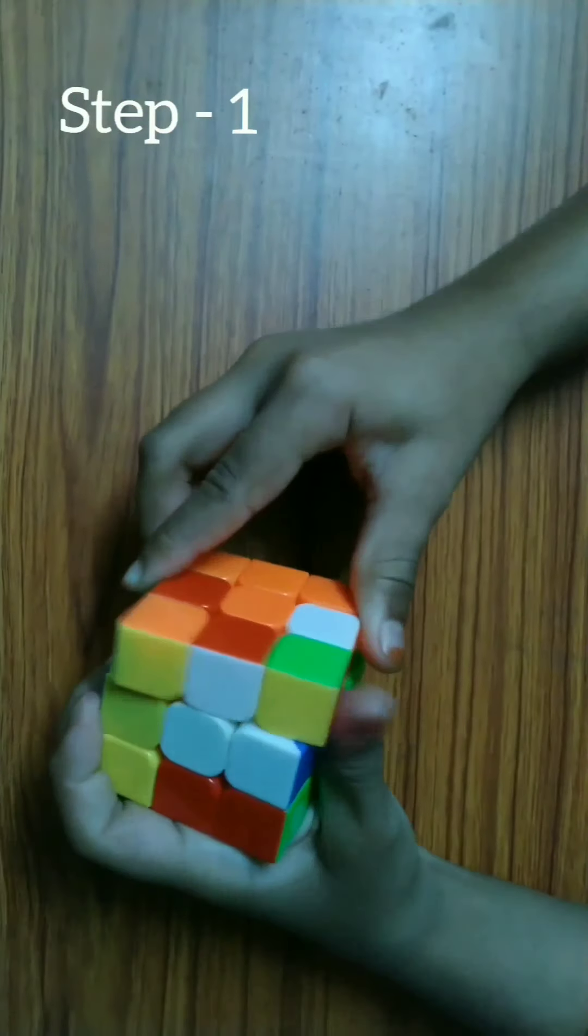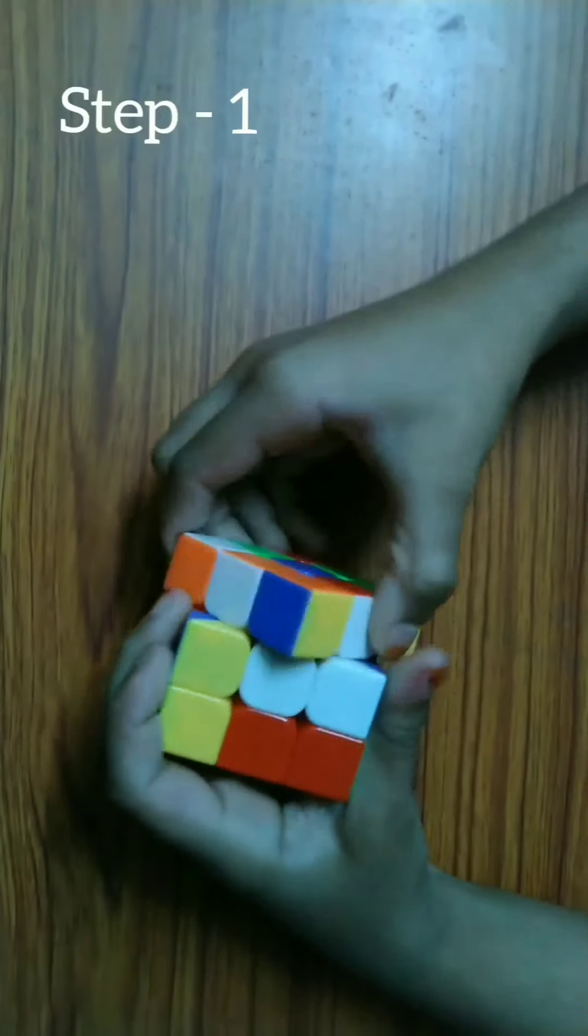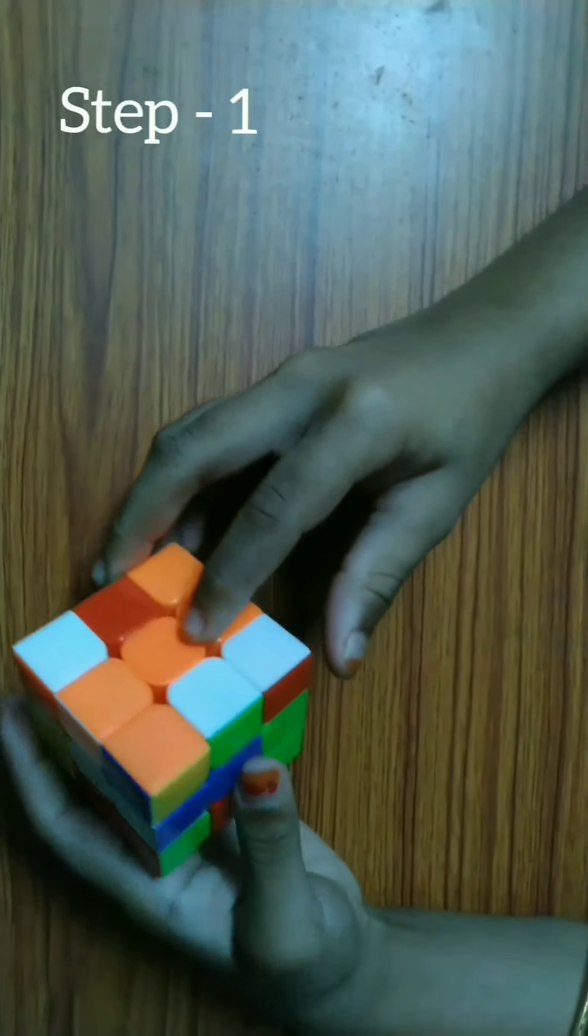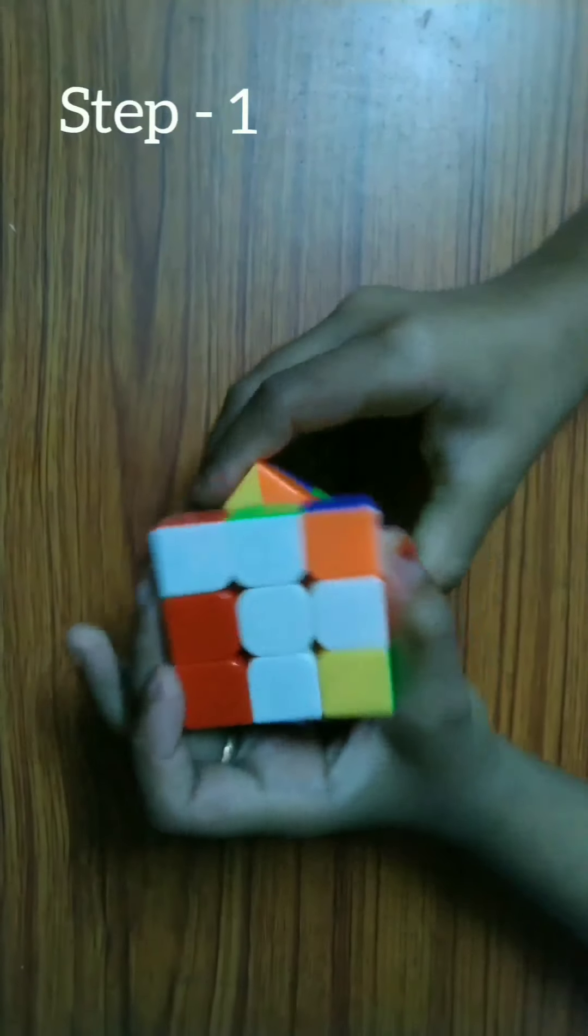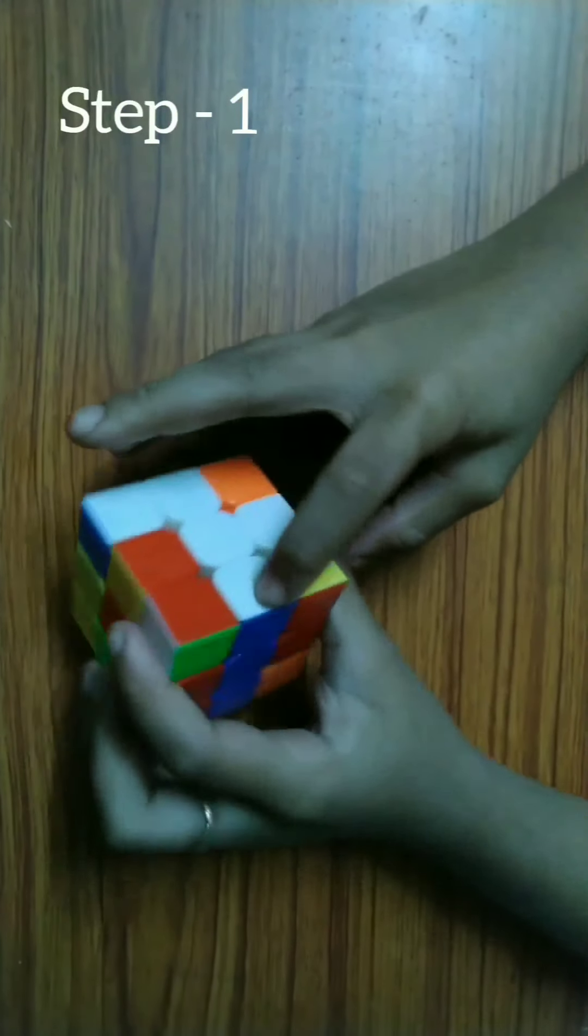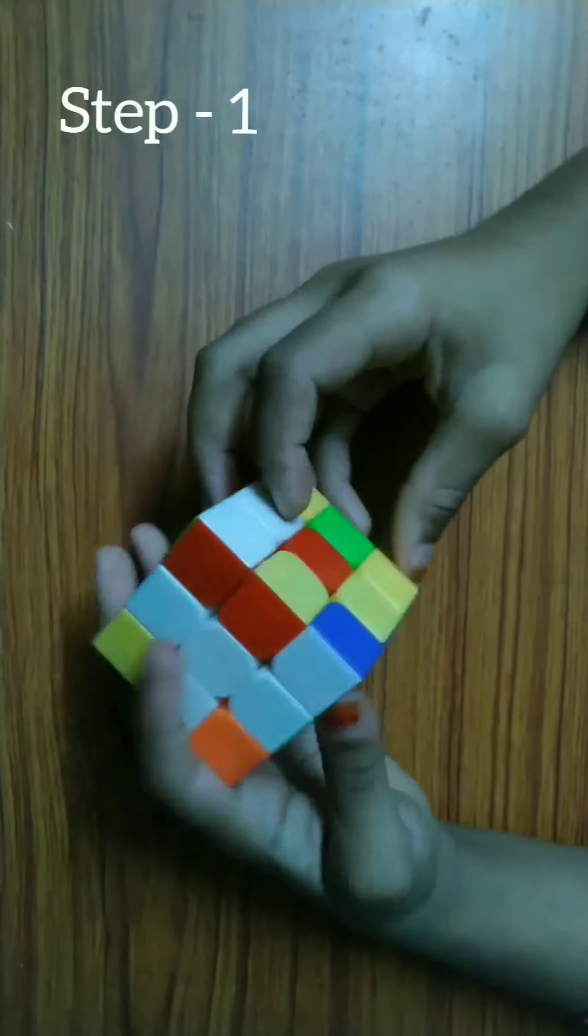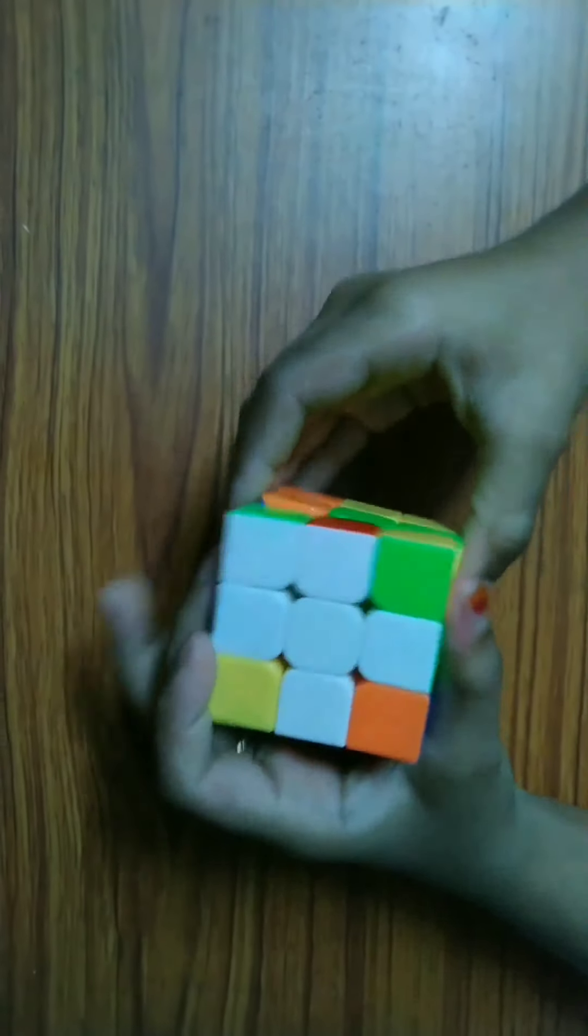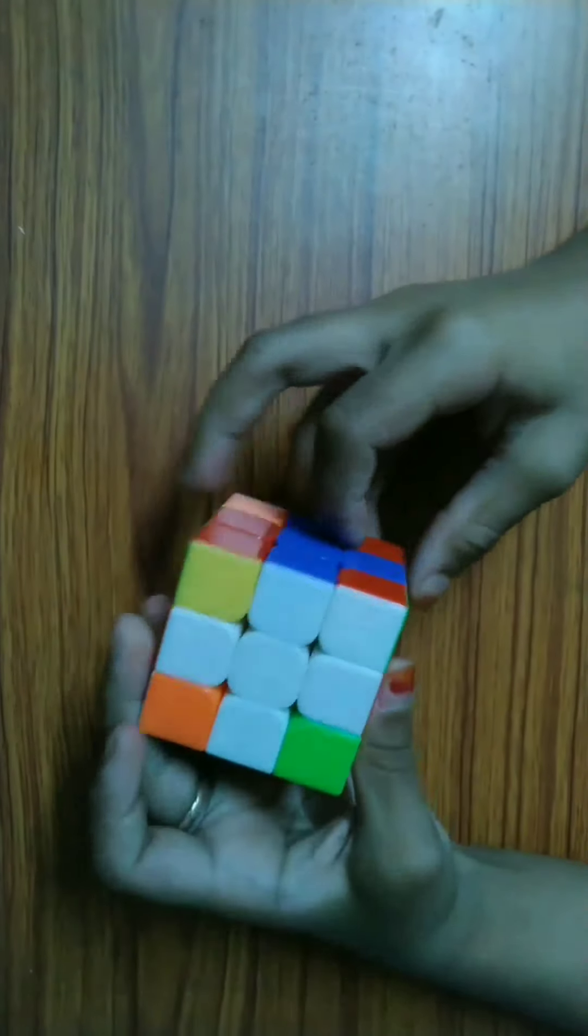If you want, you can observe how I am solving. We need to make sure that the side center color should match. After solving one side, it should not mess up the previous one. Now the first step is completed.